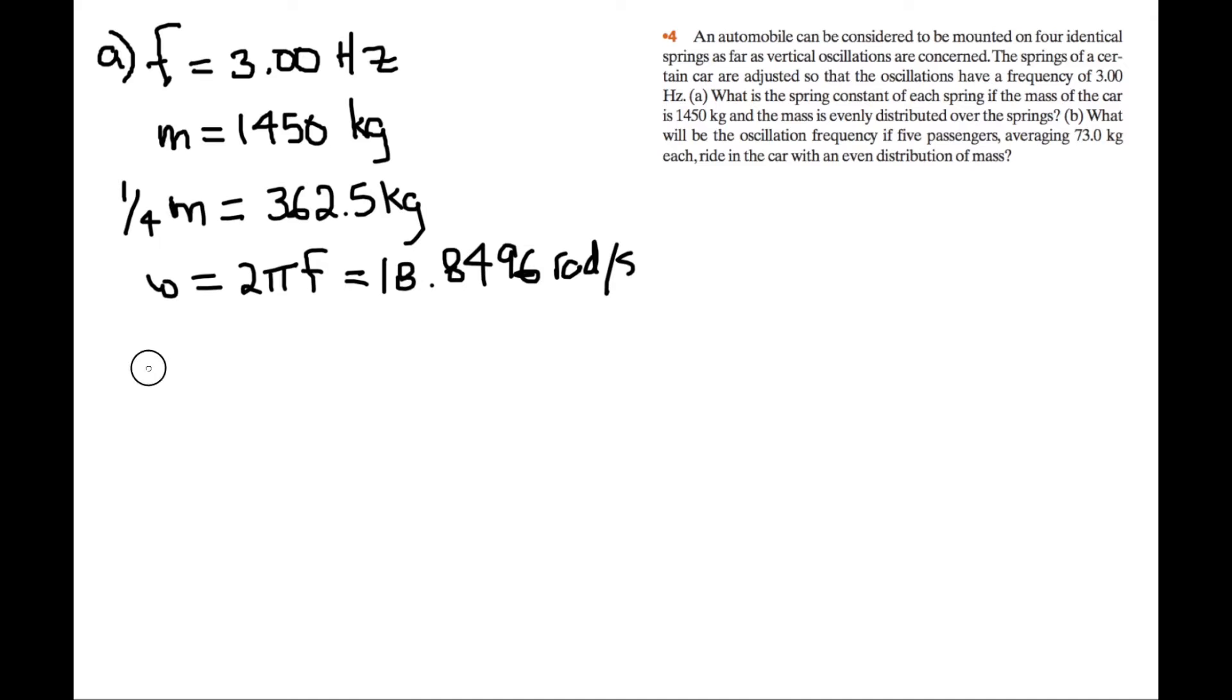So then we have angular velocity is equal to the square root of spring constant, that's for one spring constant, over mass. So then we have k, spring constant, is equal to angular velocity squared times mass.